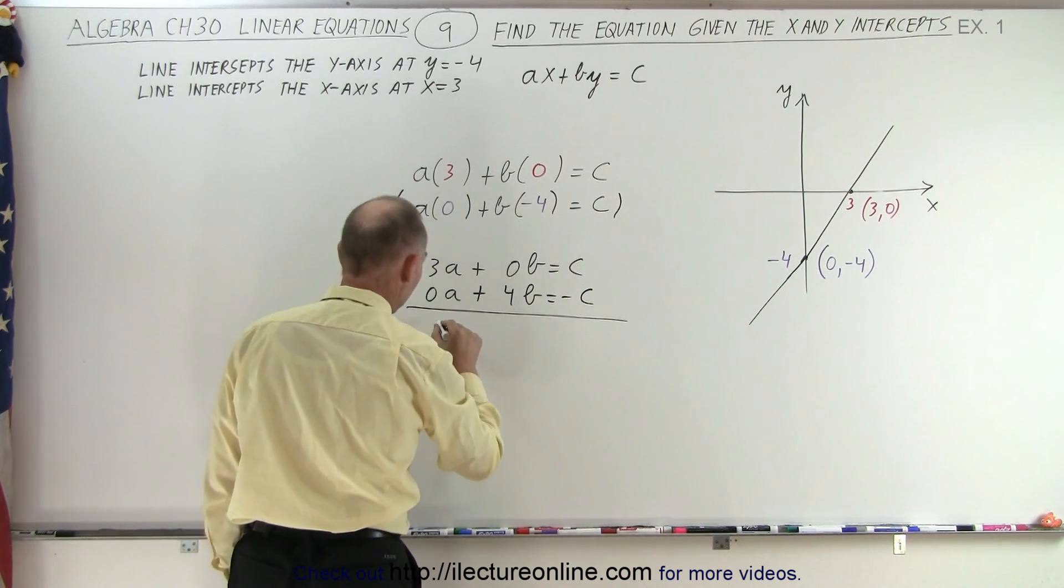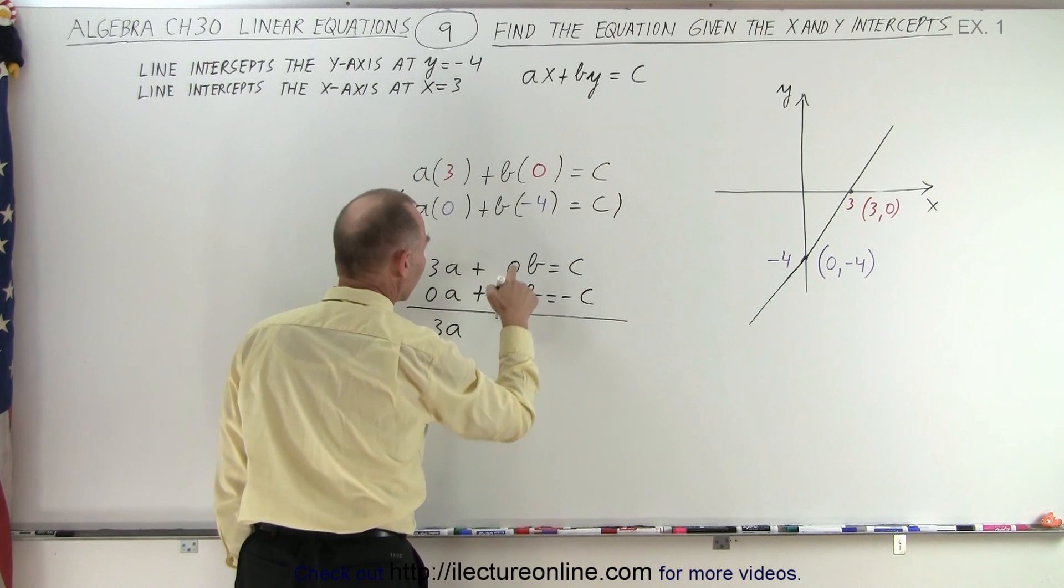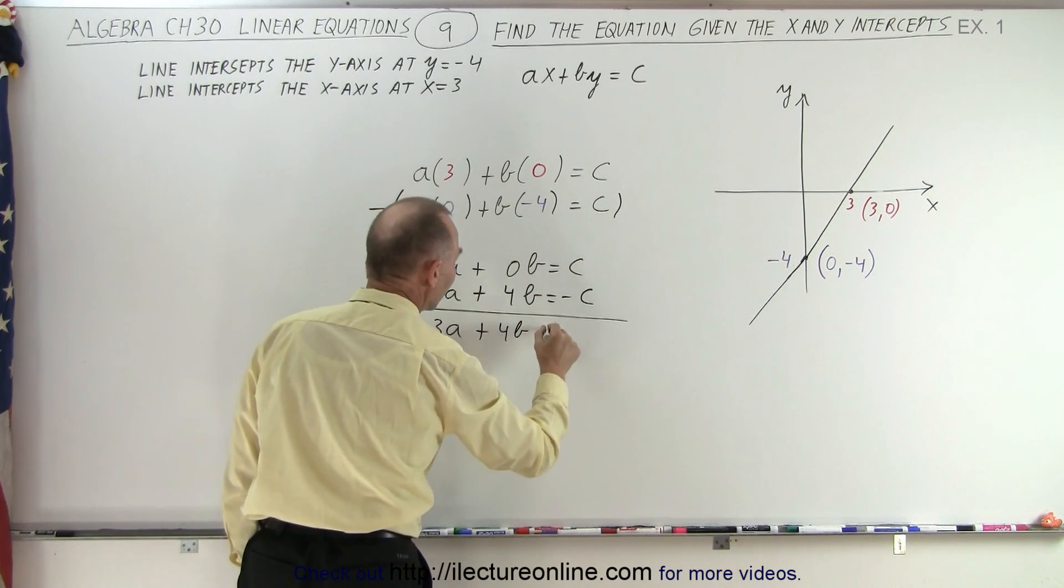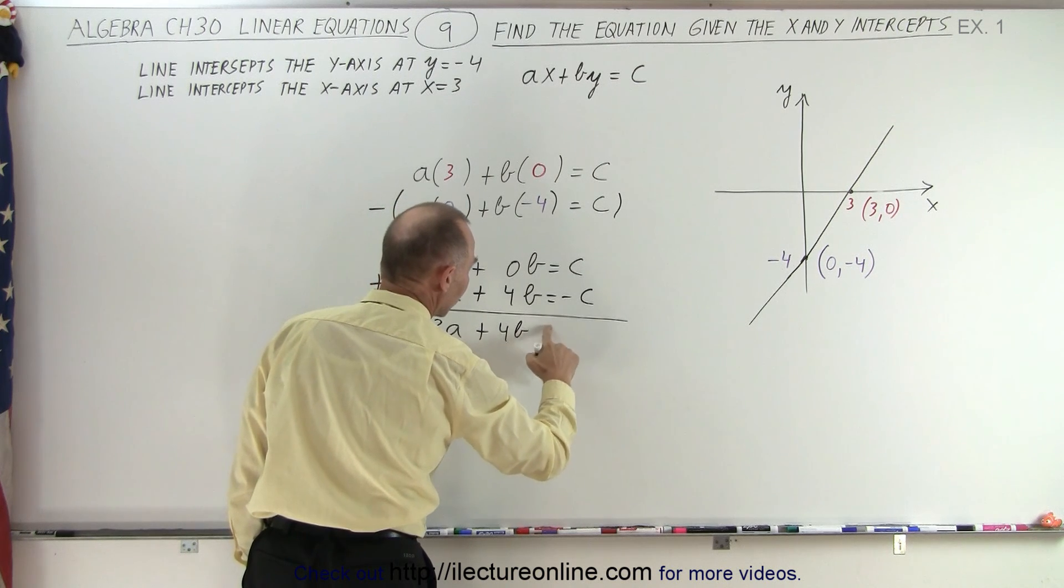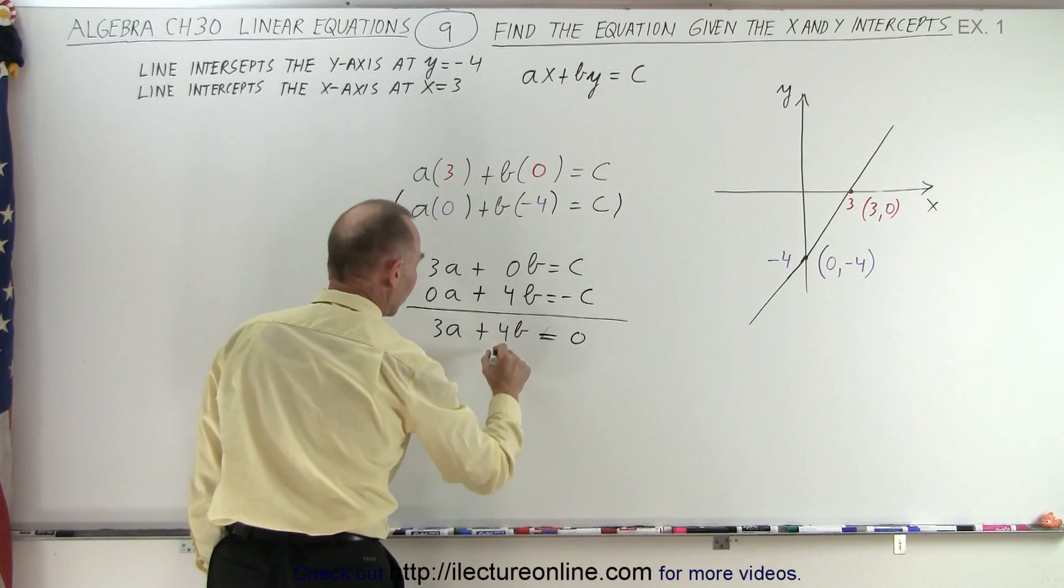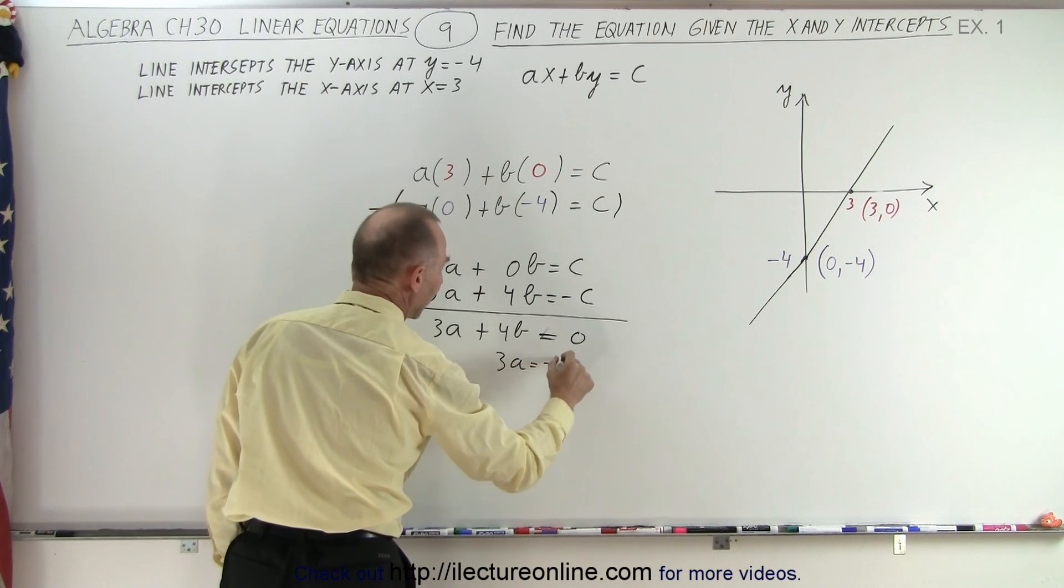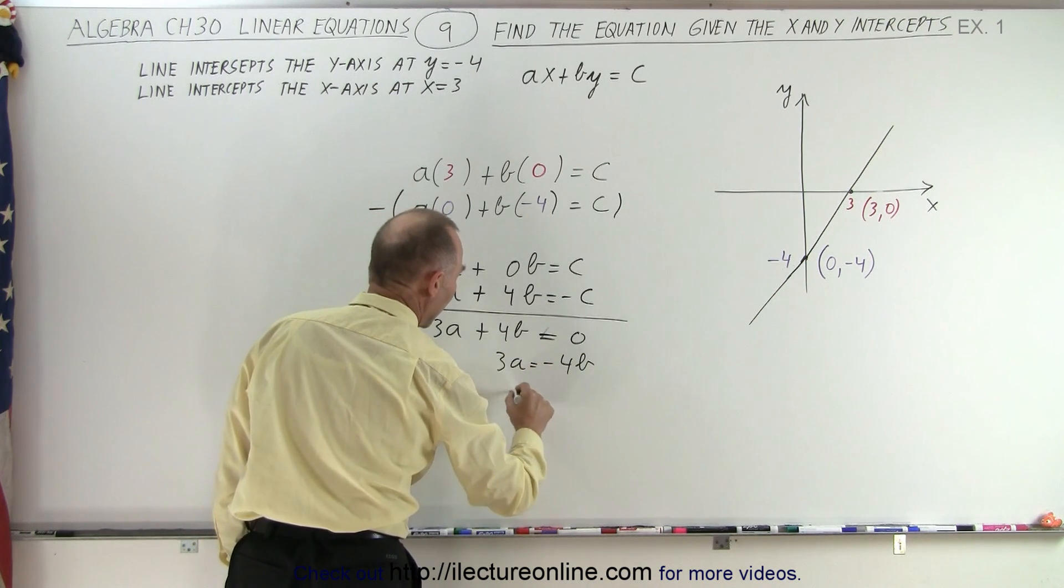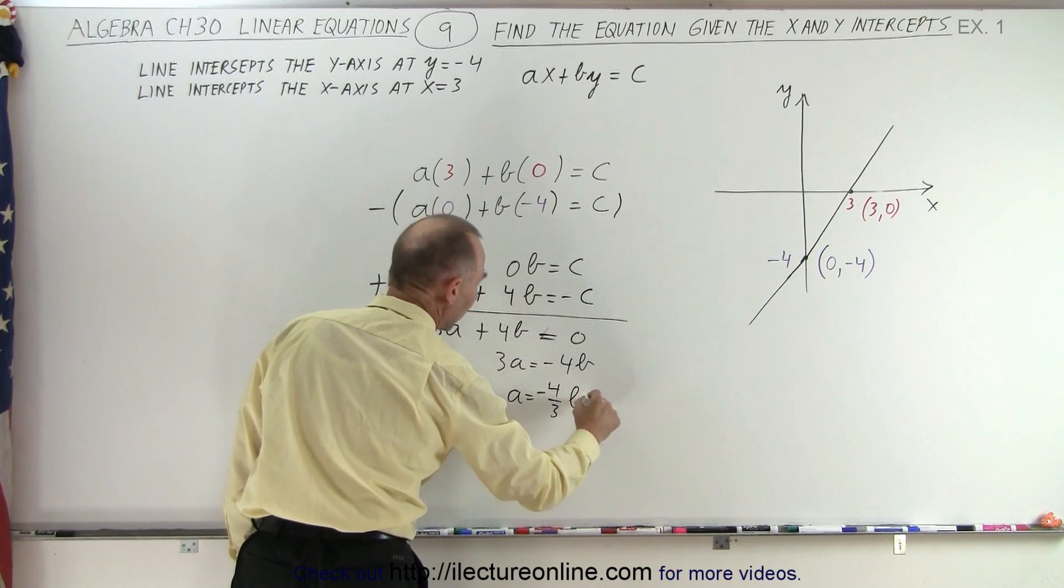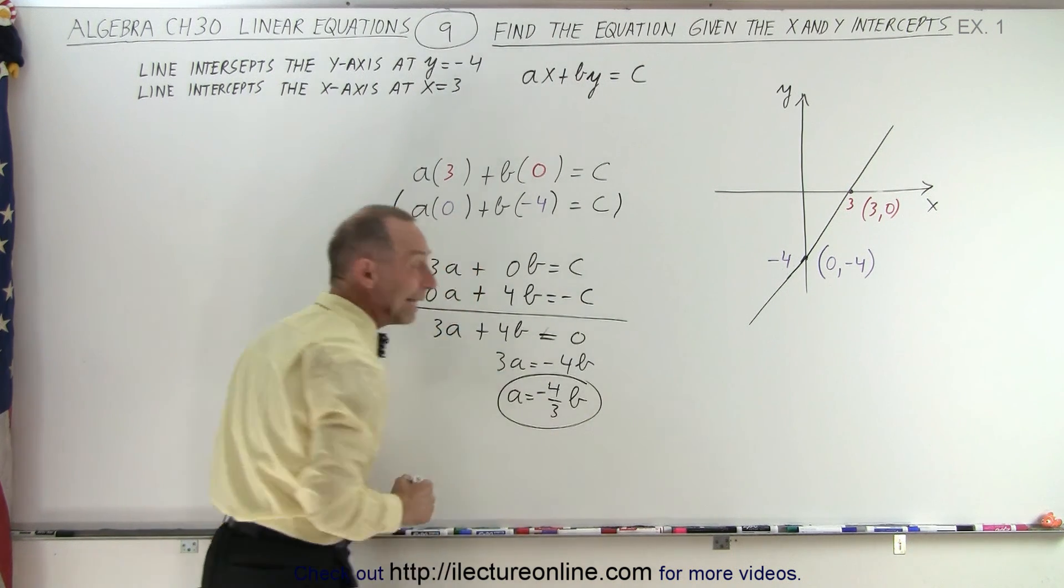So, 3a plus 0 is 3a. 0b plus 4b is plus 4b. And c minus c is 0. So, 3a is equal to negative 4b or a is equal to negative 4 thirds b. So, now we have a relationship between a and b.